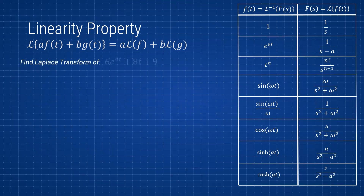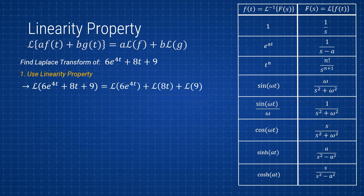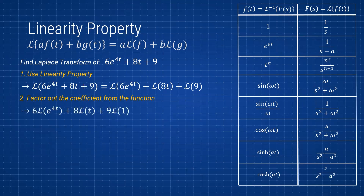We need to find the Laplace transform of 6e^(4t) + 8t + 9. The first step is to use the linearity property. The Laplace — represented by a cursive L — of the whole expression equals the Laplace of each individual term: the Laplace of 6e^(4t), plus the Laplace of 8t, plus the Laplace of 9. Next, we factor out the coefficients, giving us 6 times the Laplace of e^(4t), plus 8 times the Laplace of t, plus 9 times the Laplace of 1.